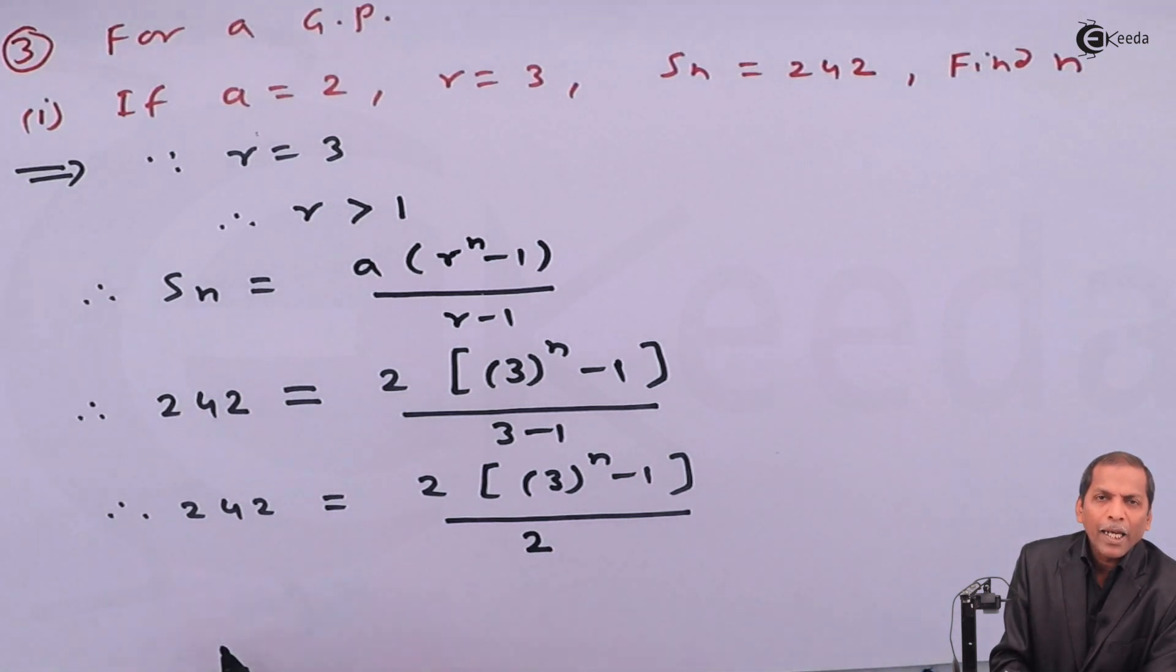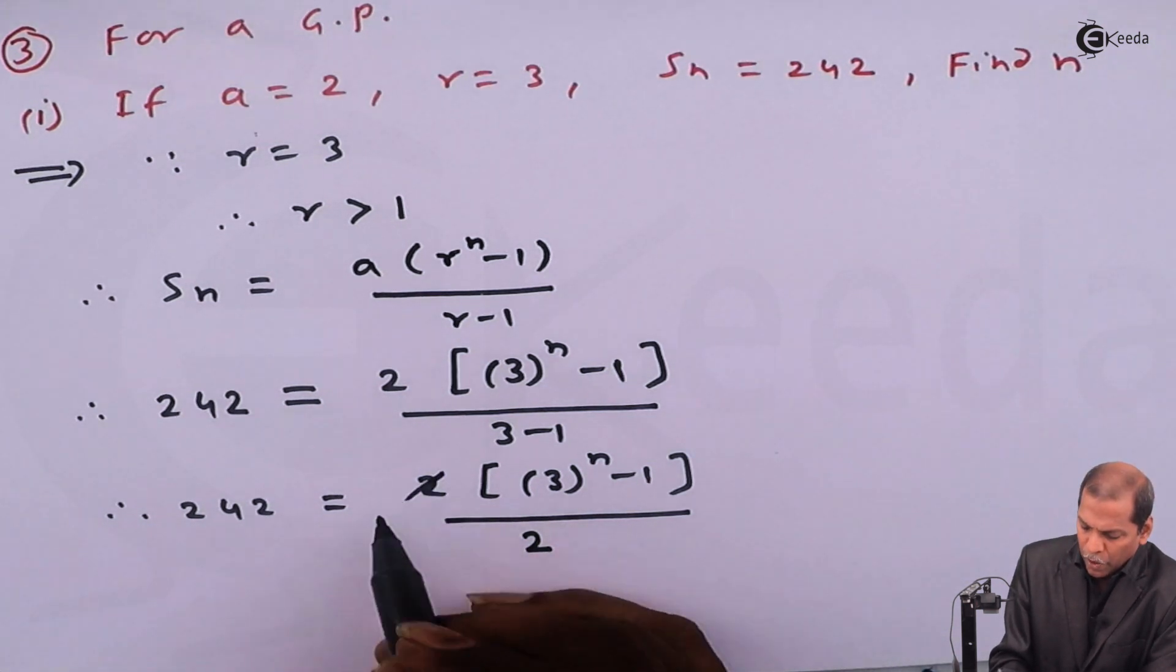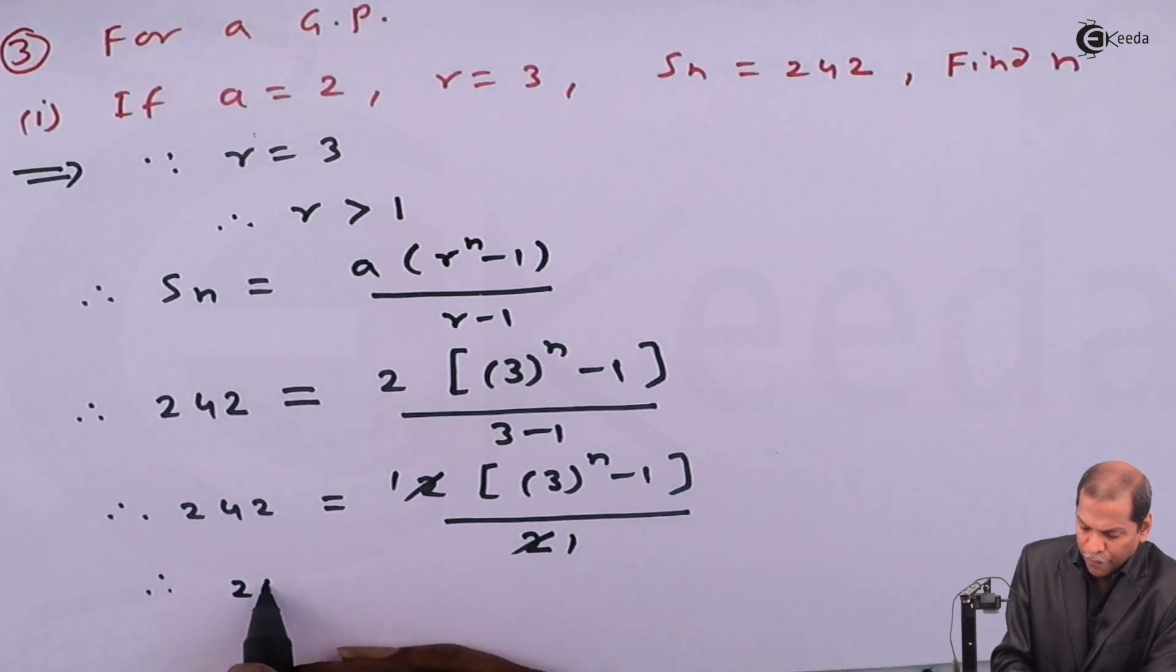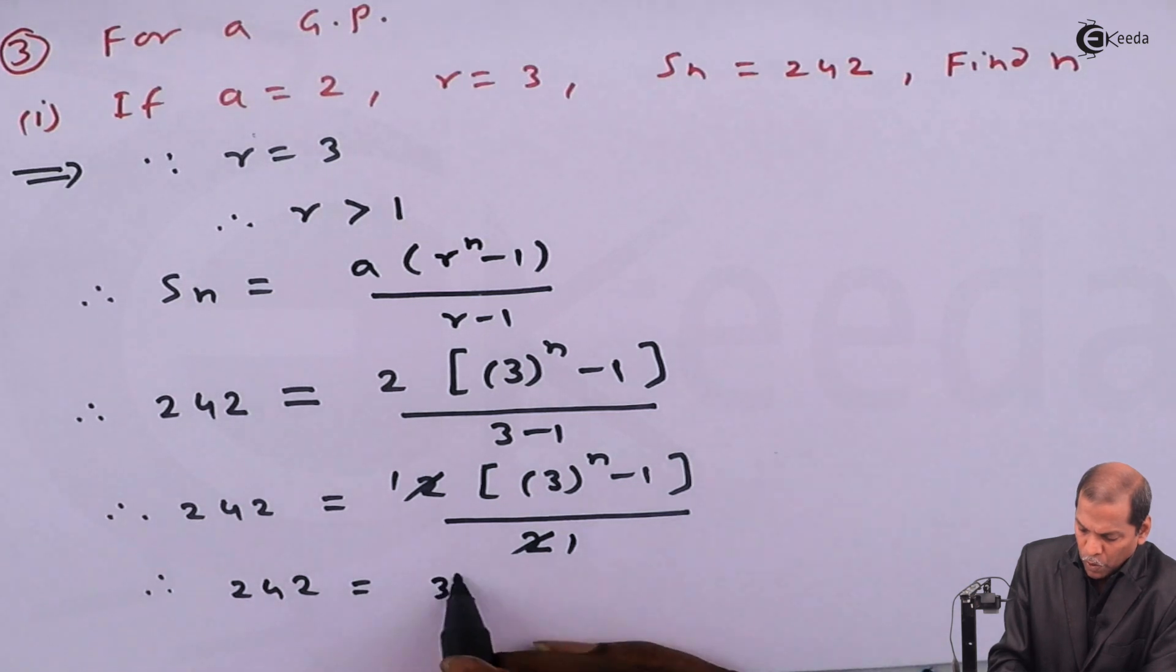Now cancelling 2 from numerator and denominator, we are left with 242 is equal to 3 raise n minus 1.